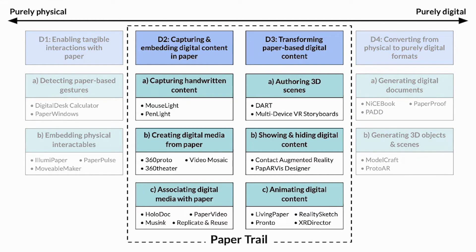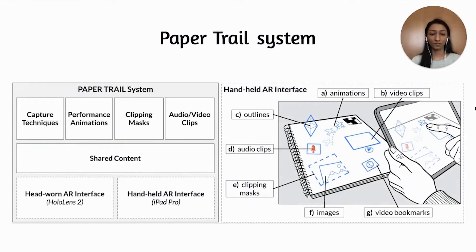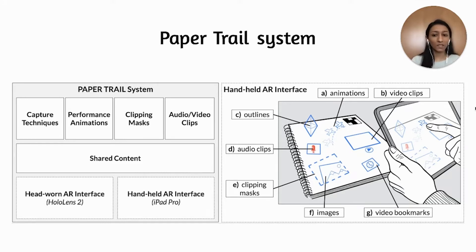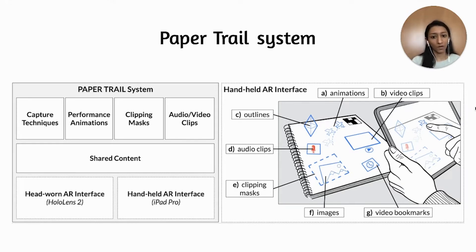We found that interactions in the center of the spectrum were most feasible to adapt to instructional use cases while preserving the physical benefits of paper. After extracting system requirements based on our target use cases and design space, we developed PaperTrail. We adapted interactions from prior work, including techniques to capture digital content, performance animations, clipping masks, audio and video clips, and shared content. To study the affordances of both handheld and head-worn AR in educational contexts, we developed interfaces for both the iPad Pro and the HoloLens 2.